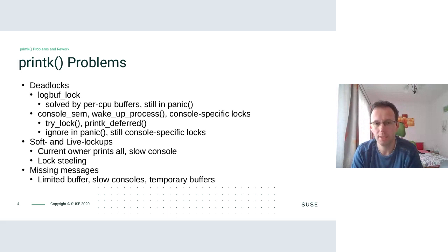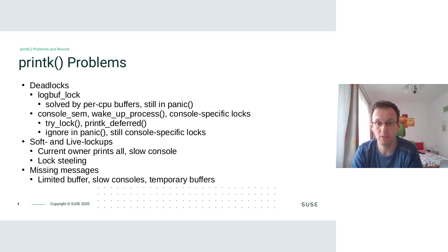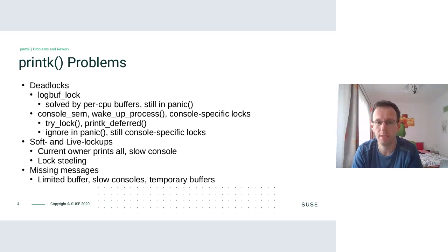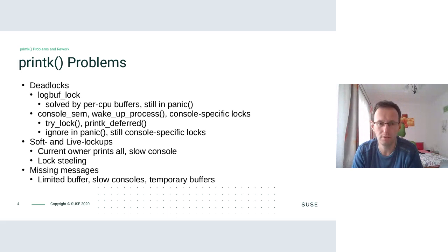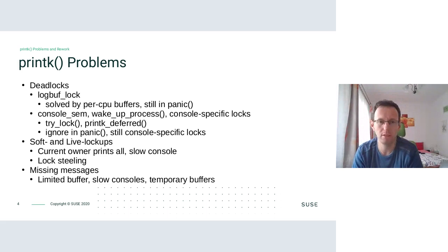The other problem is soft and live lockups, which is related to flushing messages to the console. The current owner of the semaphore is responsible for flushing all messages and it might take quite a lot of time. With increasing numbers of CPUs and increasing complexity and debugging messages, the chance of ending in a soft lockup situation is much higher, and this is definitely not usable for real-time kernel. The current solution is some hack where printk tries to steal the semaphore but it's a sleeping lock so it can't always wait and it's not reliable.